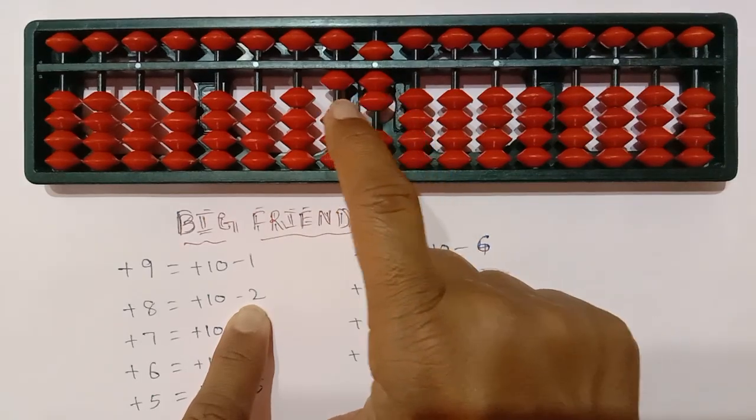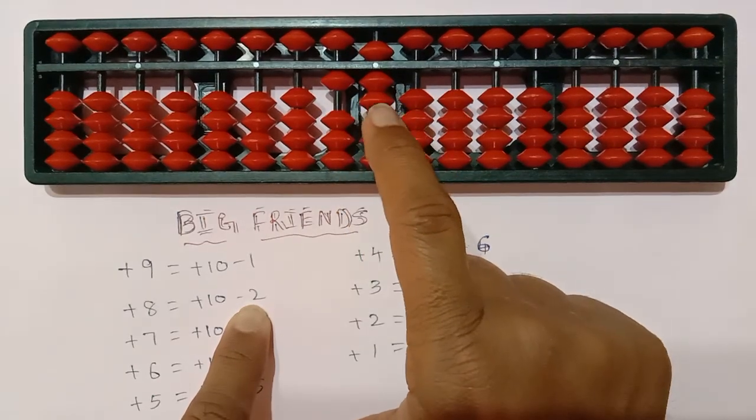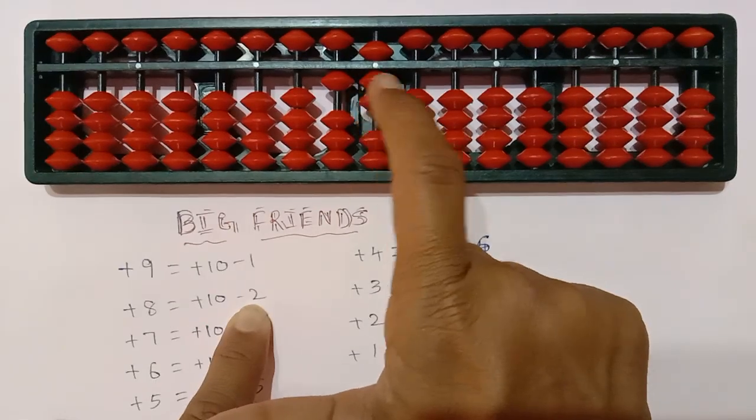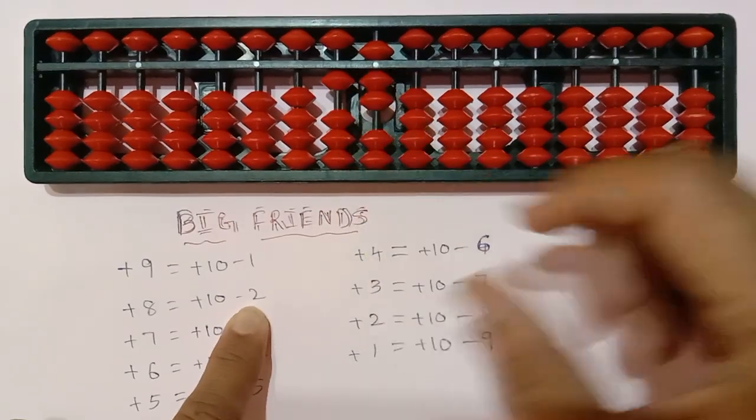Students, 9 plus 8 — it becomes 10 and here 7, so it becomes 17.